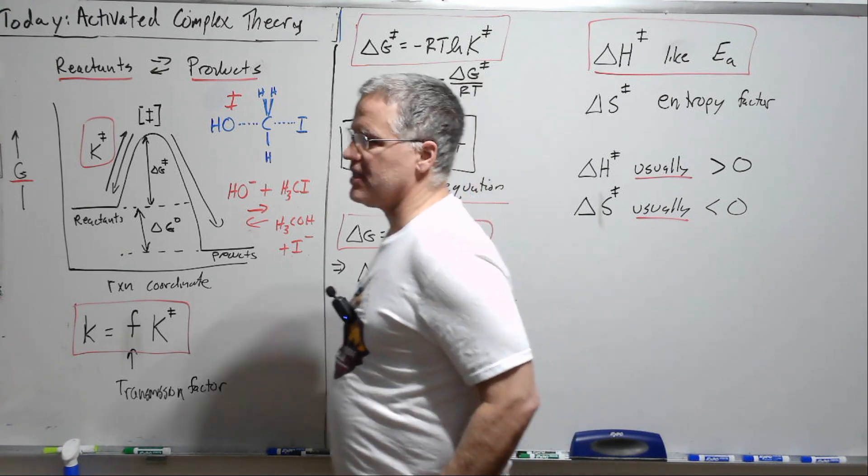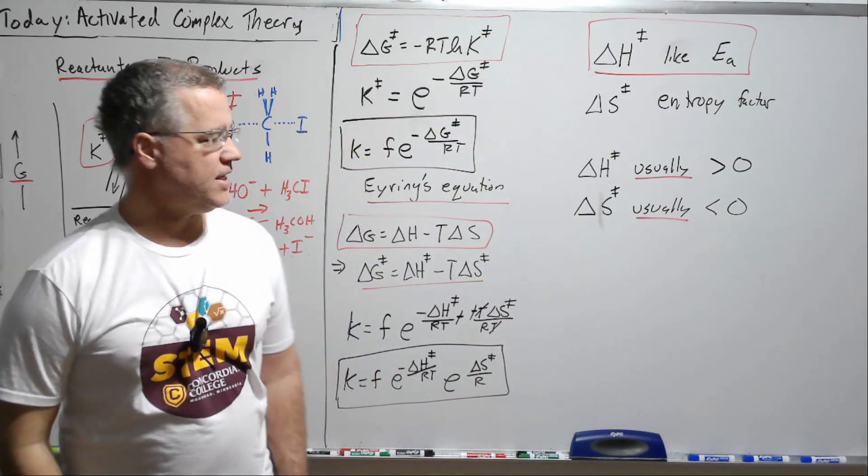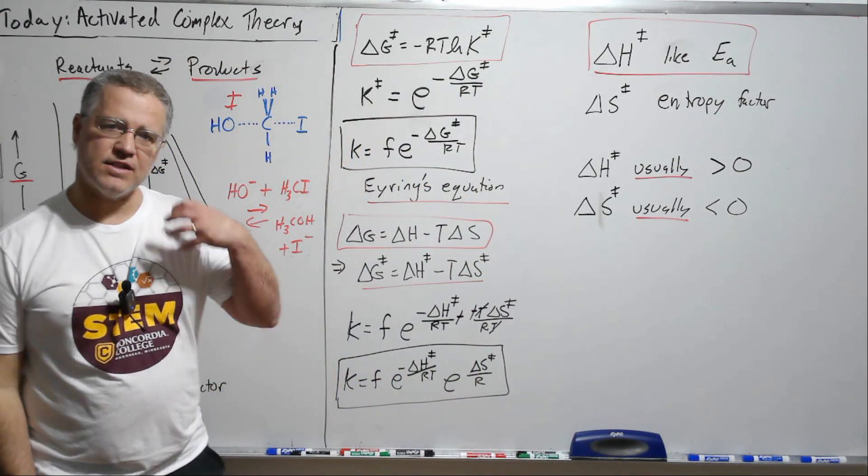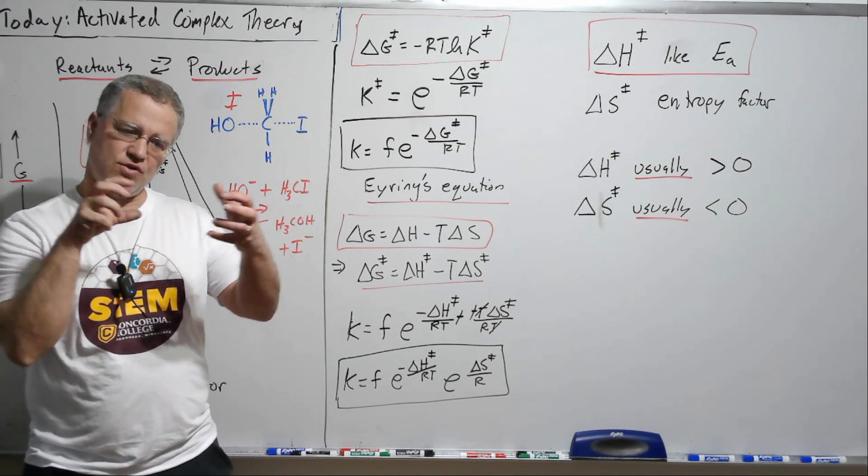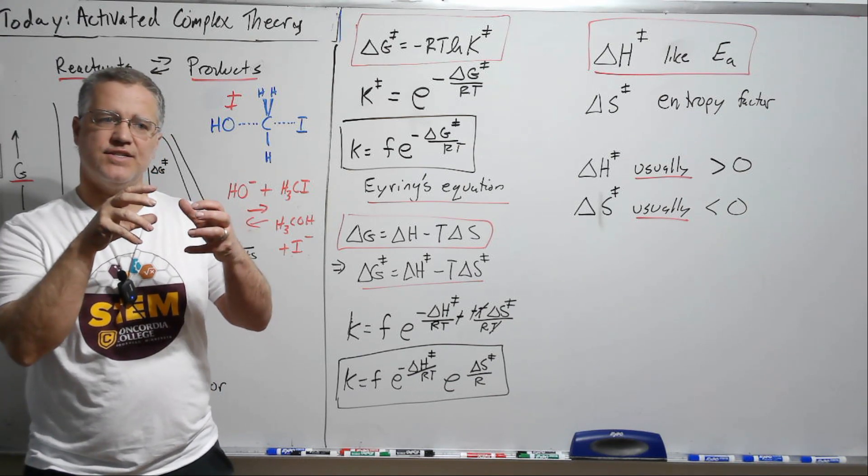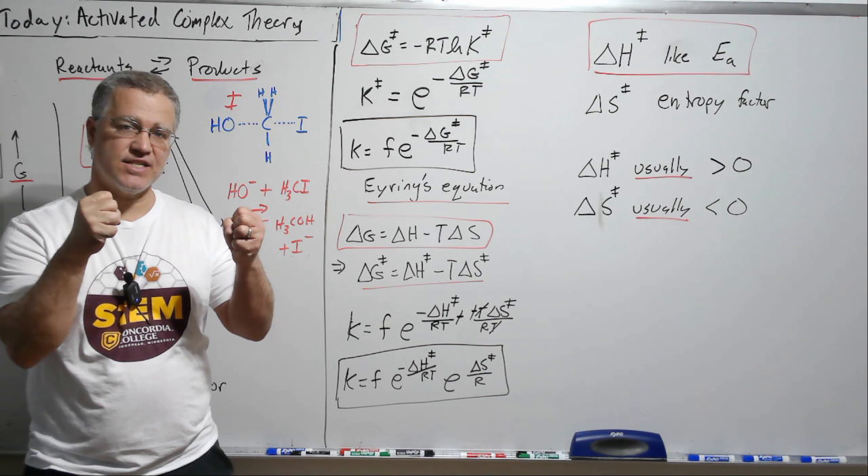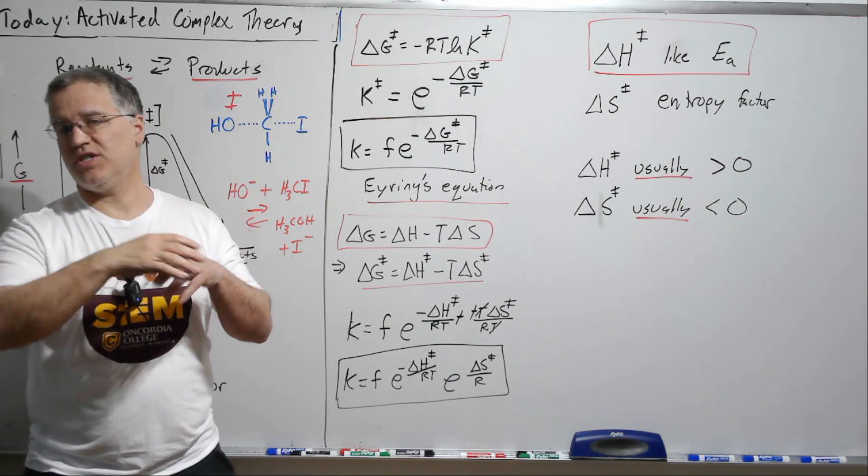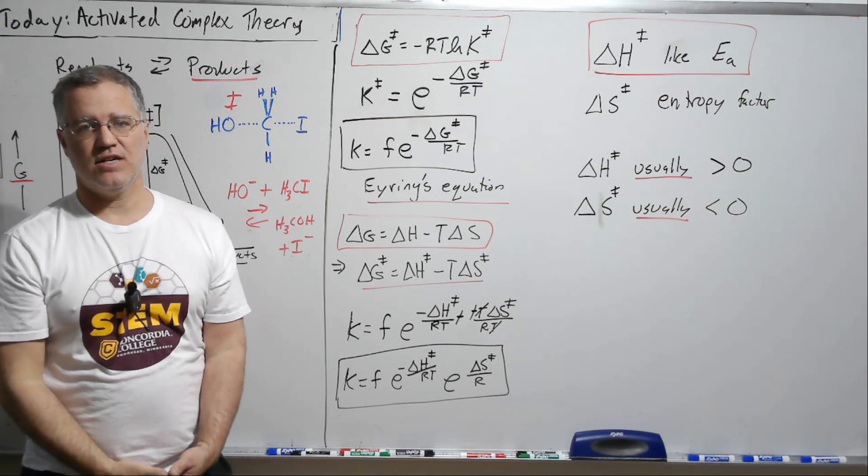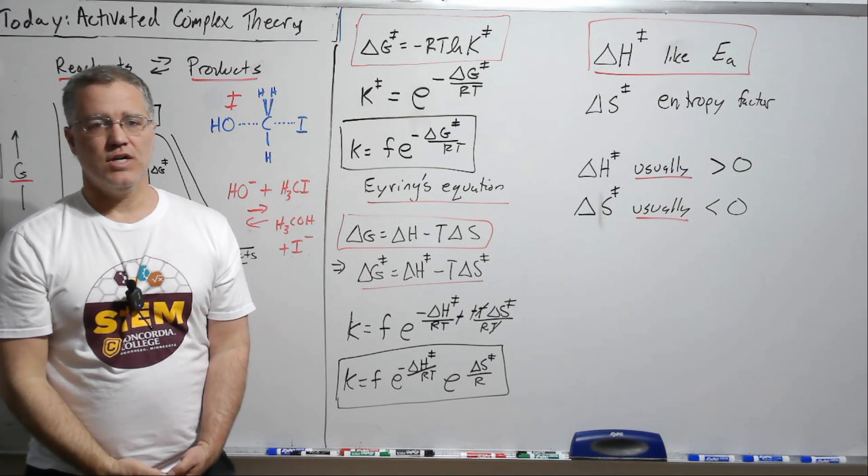So this is the activated complex theory. It's nice to think about this because it gives us a little more insight into what's going on when these reactants hit. We have to consider both the energetics, but also the entropy factor, which is not considered in the Arrhenius equation. So good chance to see this.